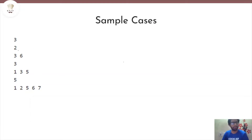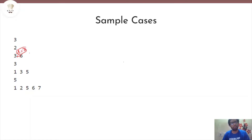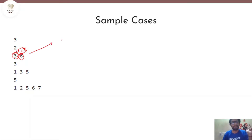Let's look at the first sample case. The positions are 3 and 6. The distance between these two people is 3. So if D equals 3, there is no way more than one person gets infected. If the person at position 3 gets infected, only he gets infected — he cannot infect anyone else because the distance between 3 and 6 is 3, which is greater than 2. Similarly, if the second guy at position 6 gets infected, he cannot infect the first guy. So in the best and the worst possible cases, only one person gets infected.